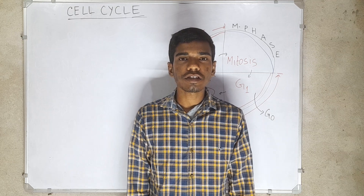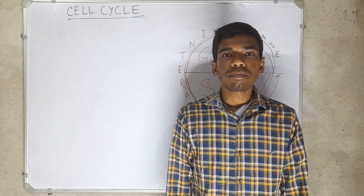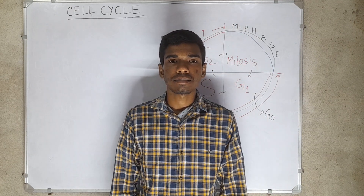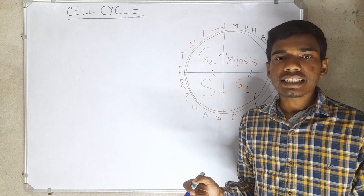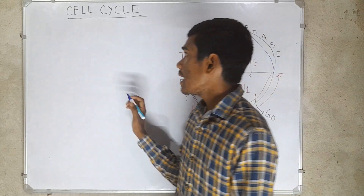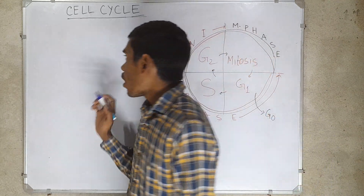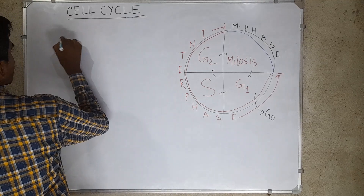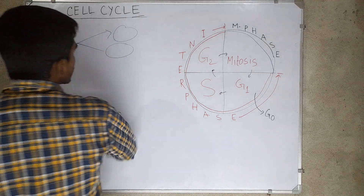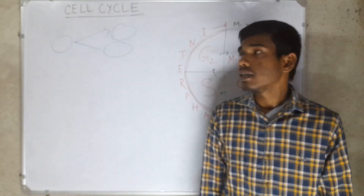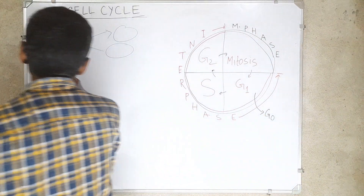Hello students, I am Sudarshan Pal, welcome to Sudarshan's Biology. Today's topic is cell cycle. Cell division is a vital process in all living organisms. The cell is divided into two or more parts, and for cell division, DNA replication is needed.